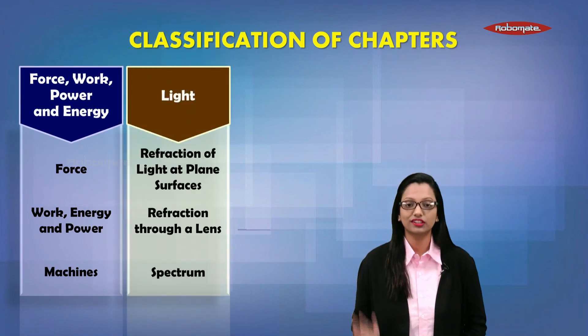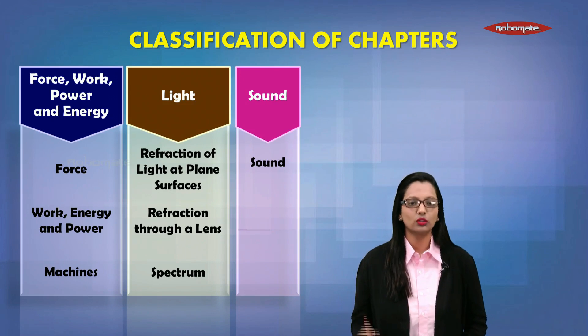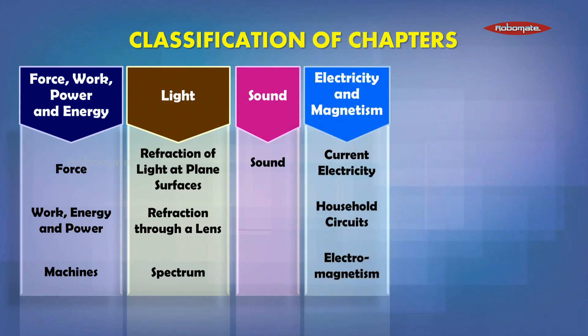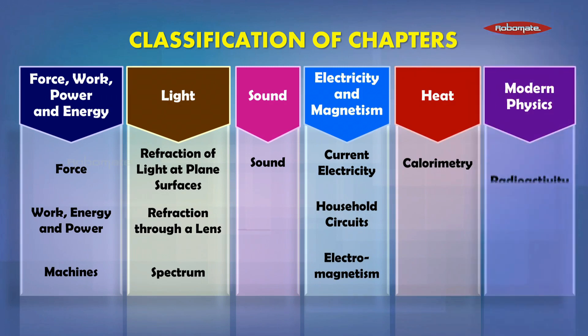The next section is about light, which has three chapters under it. Then we have sound, which stands alone with only one chapter. The next one deals with electricity and magnetism, having three chapters. Then we have heat, where calorimetry stands all alone. And the new topic is modern physics, which has the chapter radioactivity.